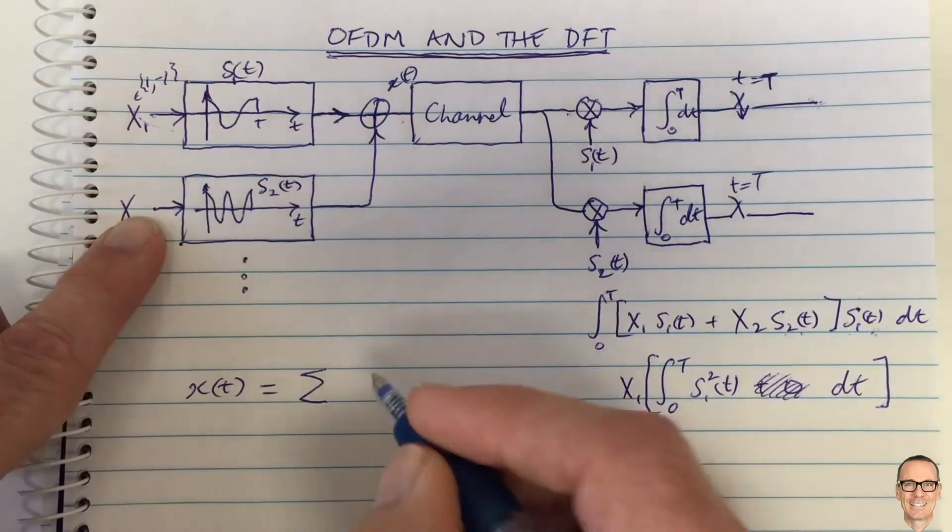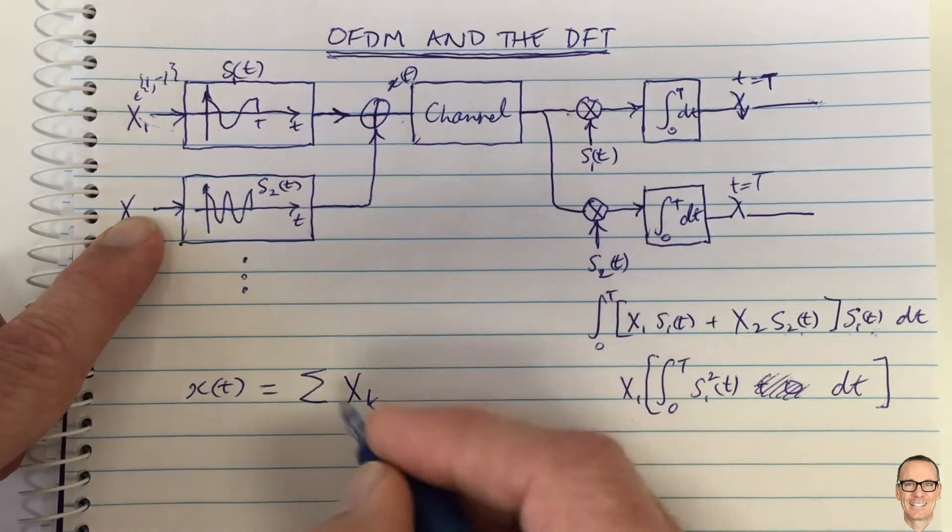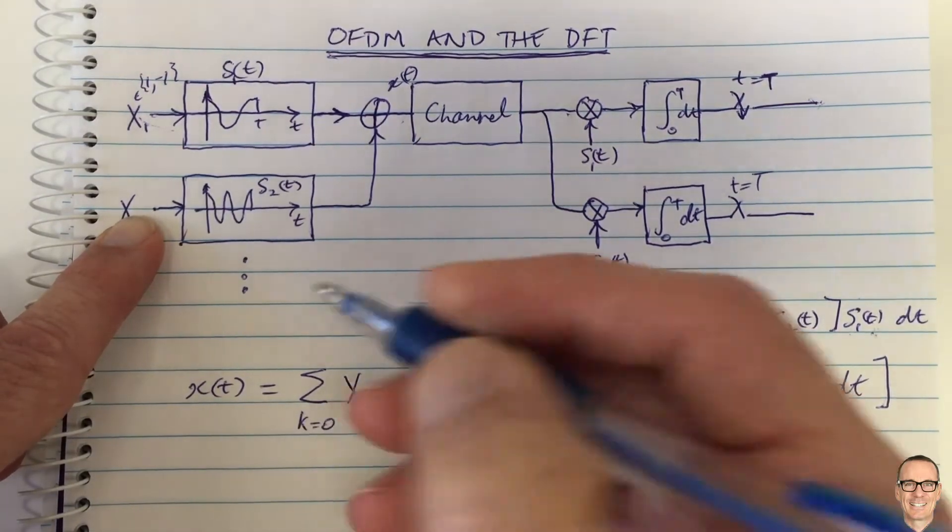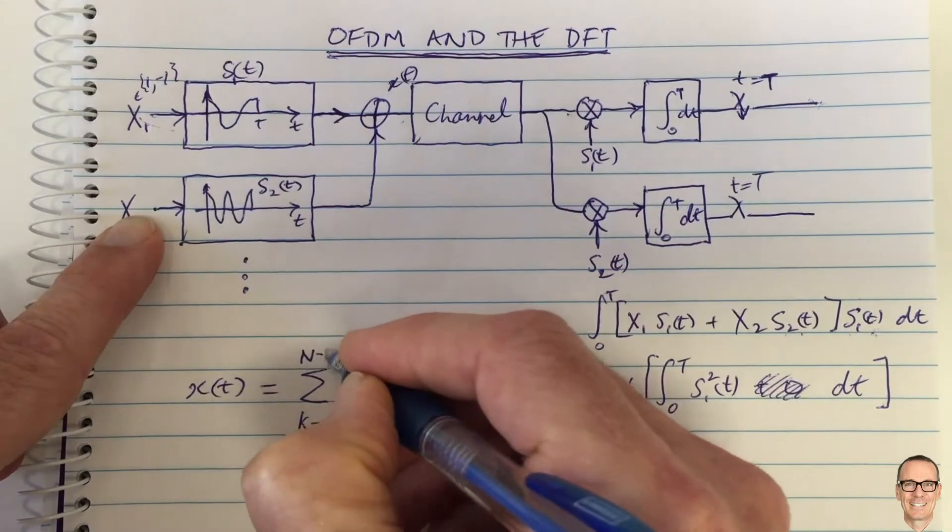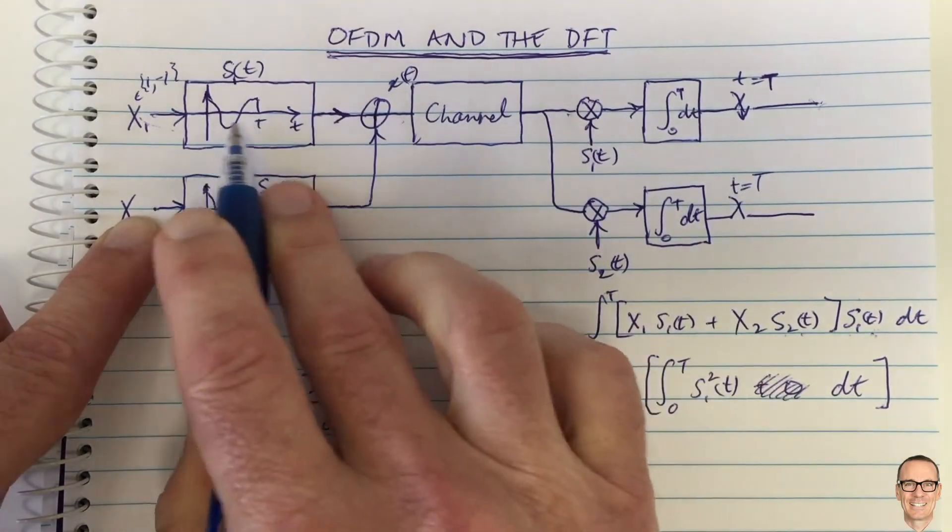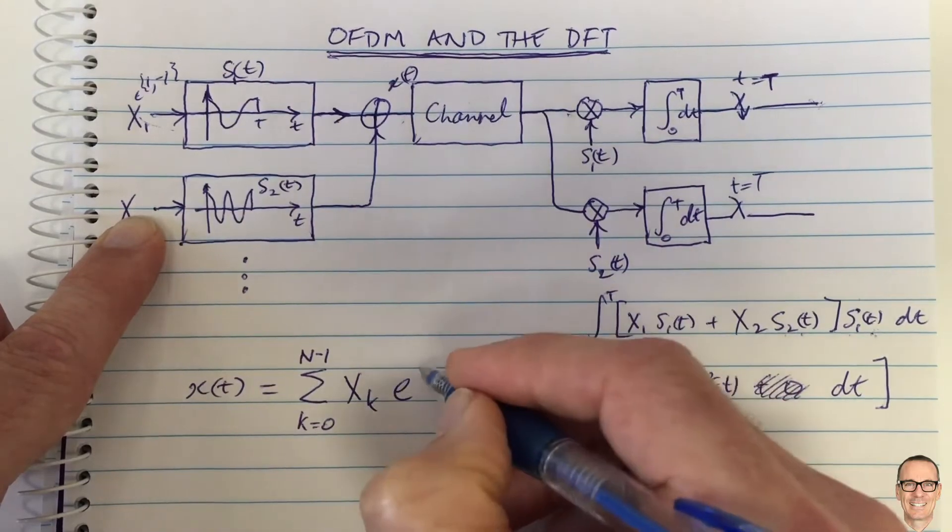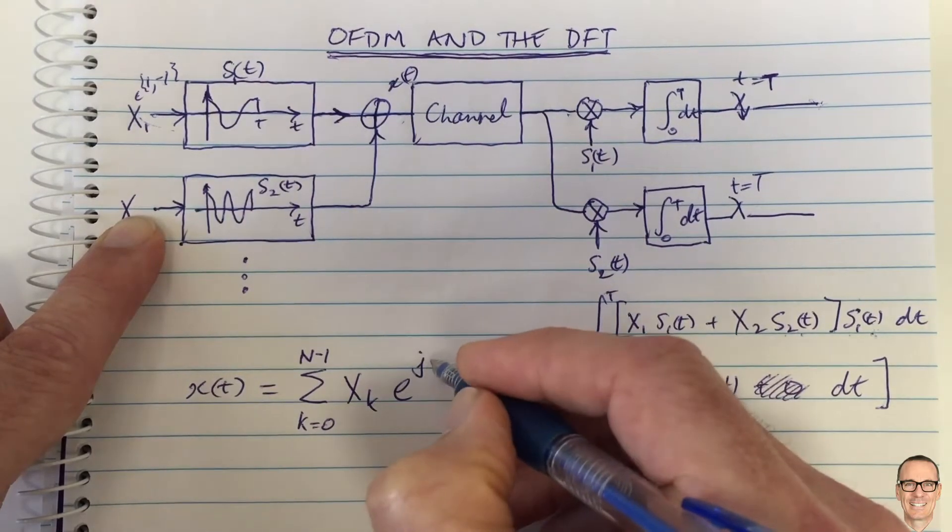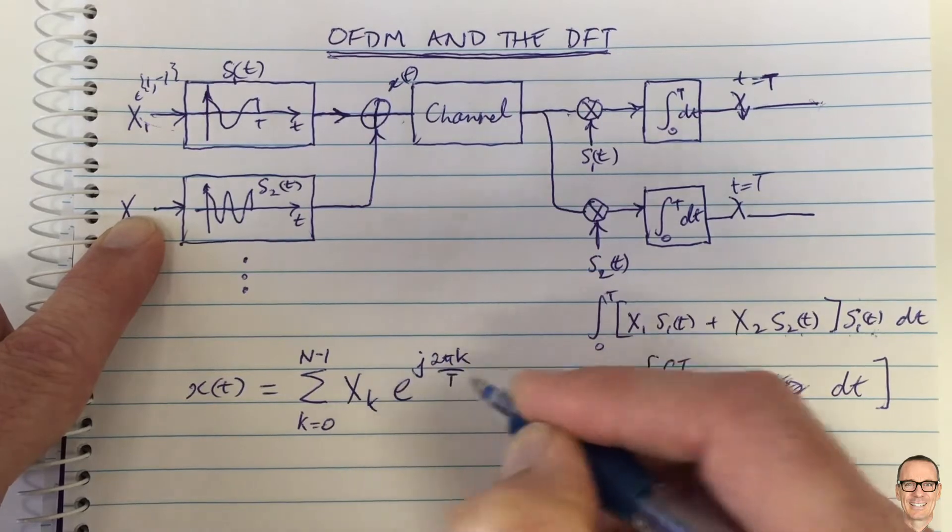The general form is that x(t) will be equal to the summation of xk from k equals 0 to n minus 1 of these sinusoids. The sinusoids are written in complex form: e to the (2πk/T) times t.